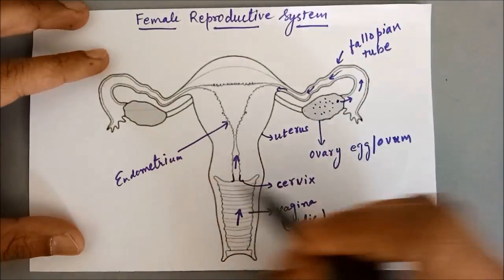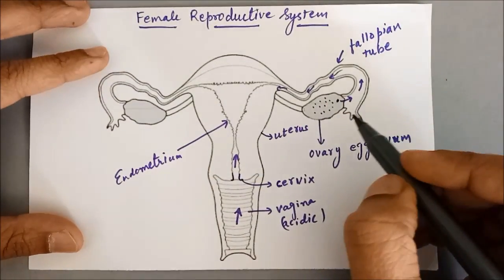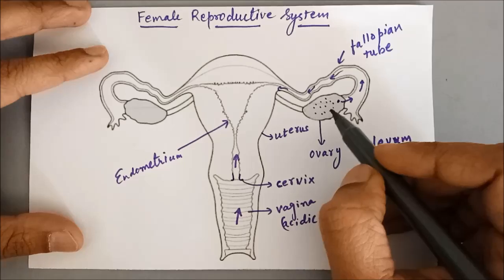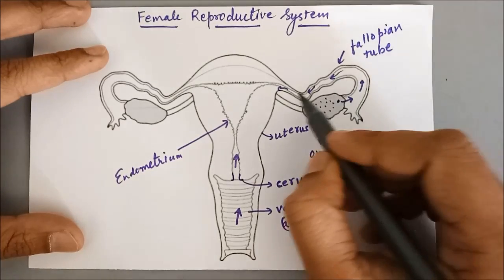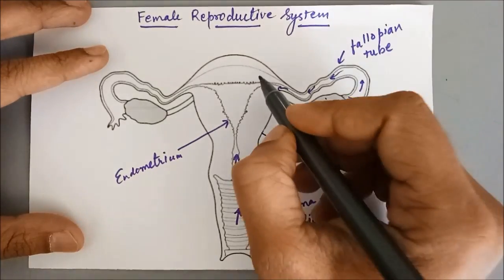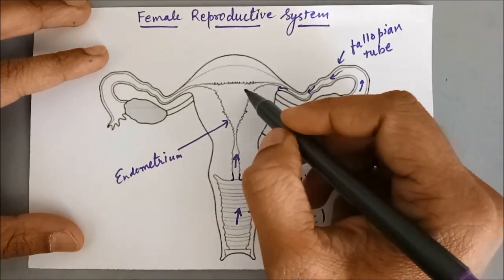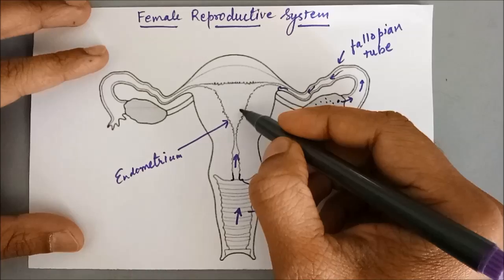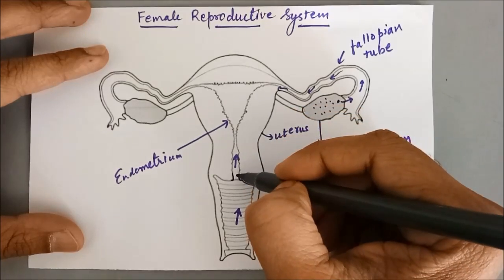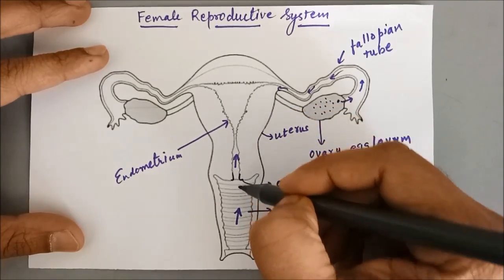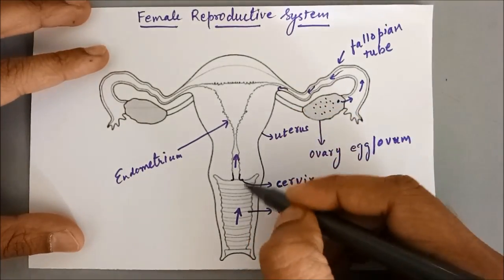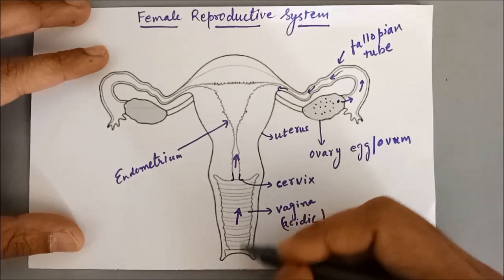So this is the female reproductive system: ovary, then fallopian tube, then uterus. The uterus ends into the cervix, and then the cervix opens into a long hollow tube called the vagina.